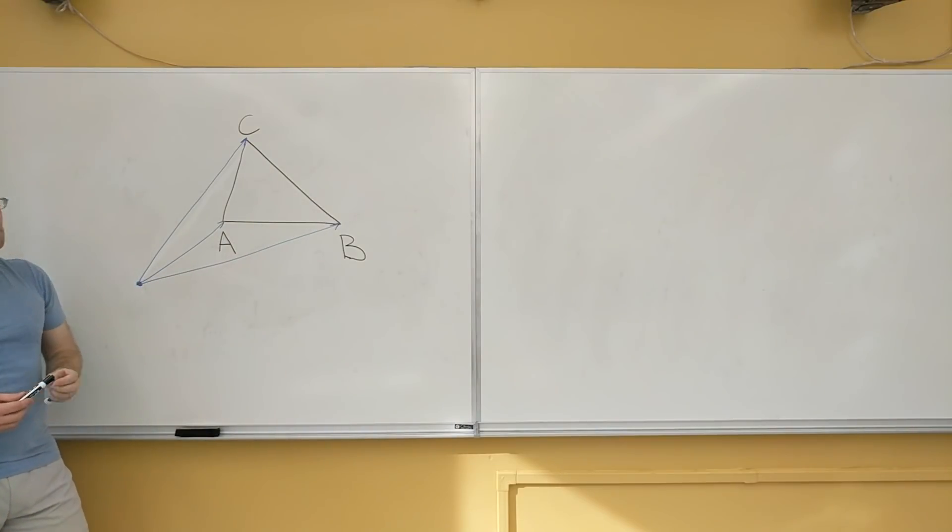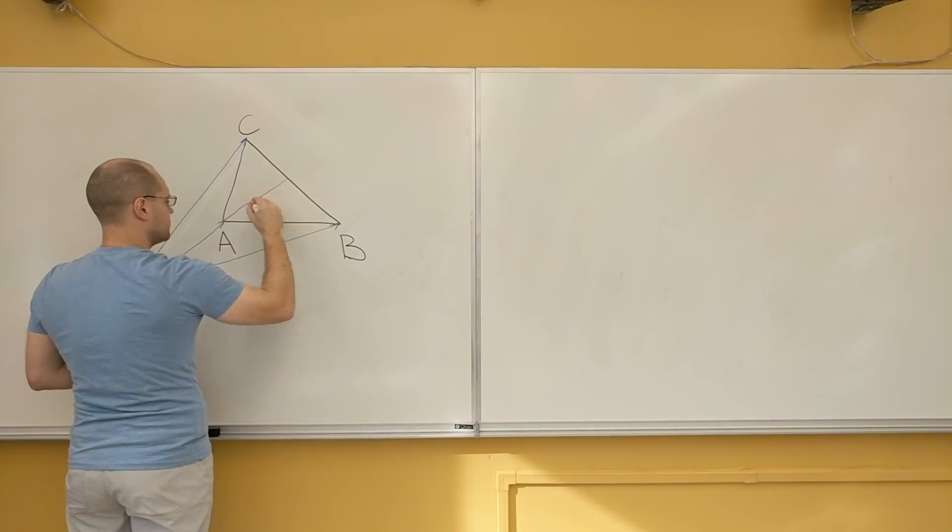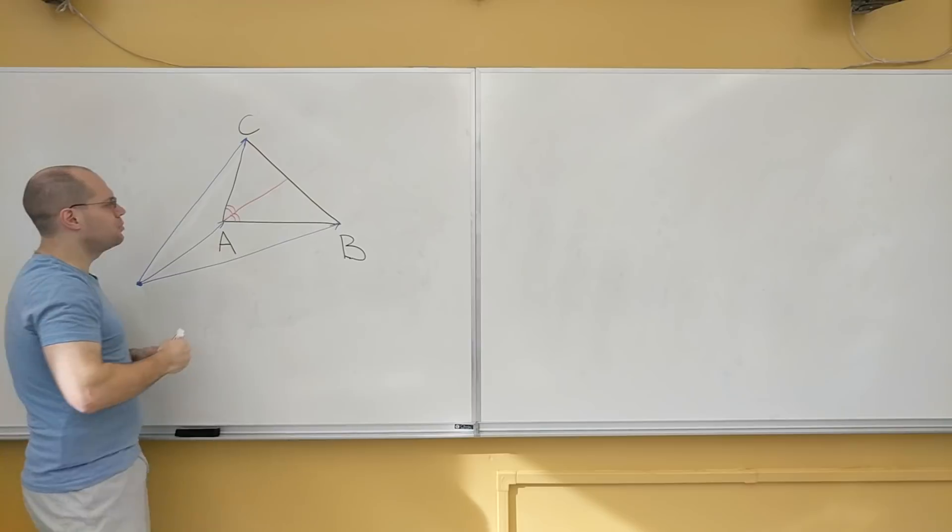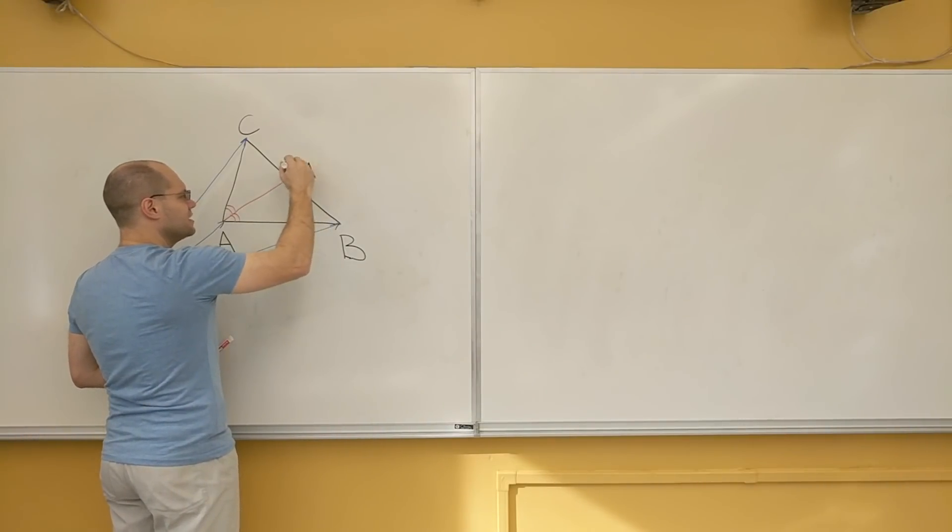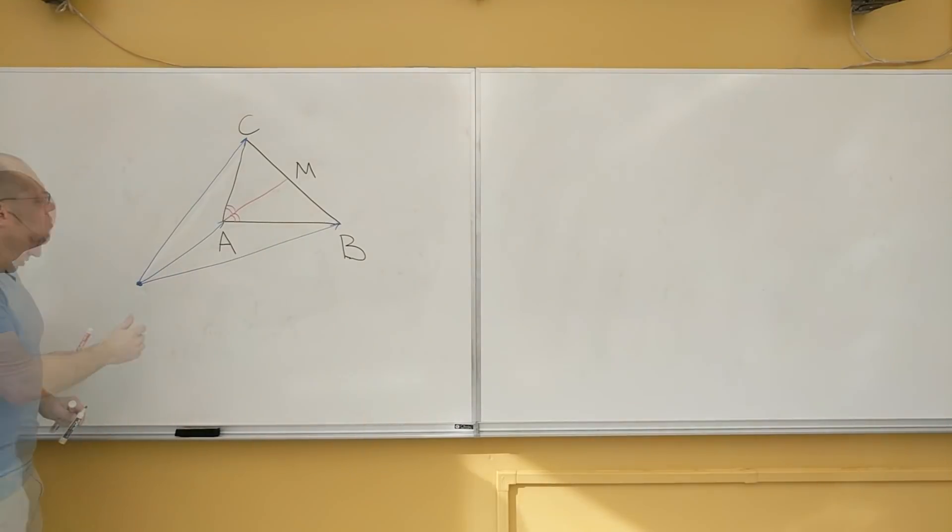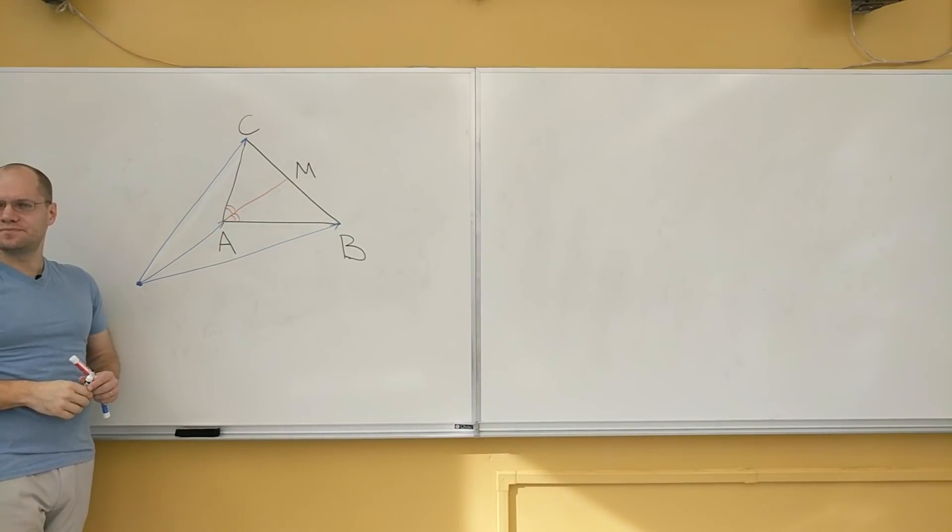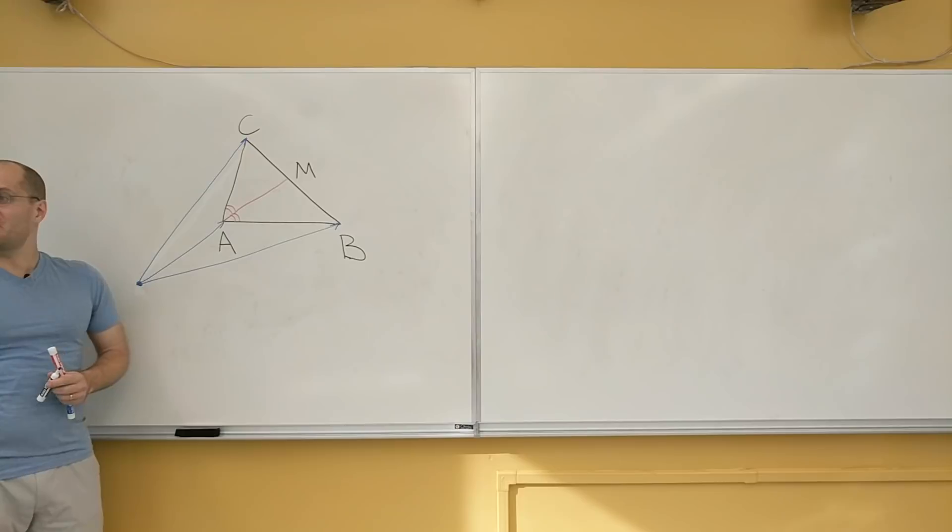Now we're going to bisect the angle A. It will land at the point M. And we'll think of it as, once again, M vector, which is the vector that points from this point to M, capital M vector. And the question is, how do you express M in terms of A, B, and C?